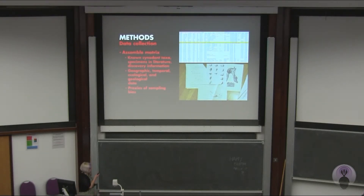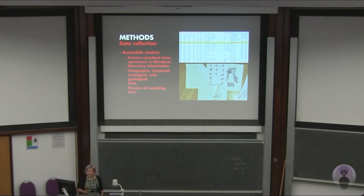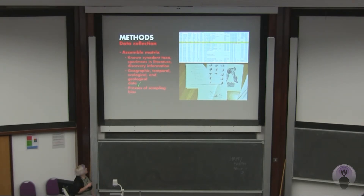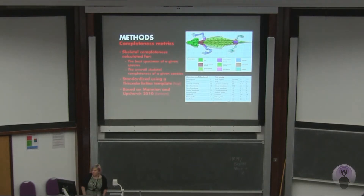So I assembled this matrix with all known cynodont taxa, which was 117 genera and 134 species. Interestingly, from the literature it ended up being only around 190 or so specimens. I then also gathered geographic, temporal, ecological, geological data and the proxies of sampling bias.